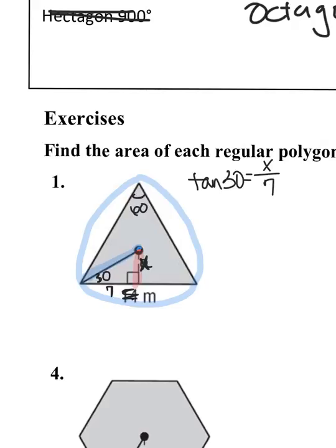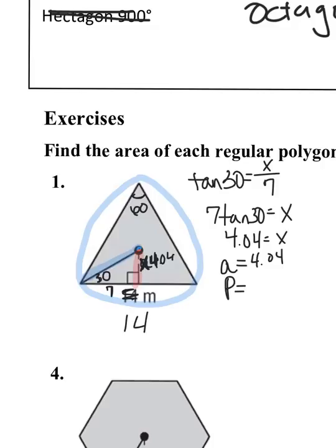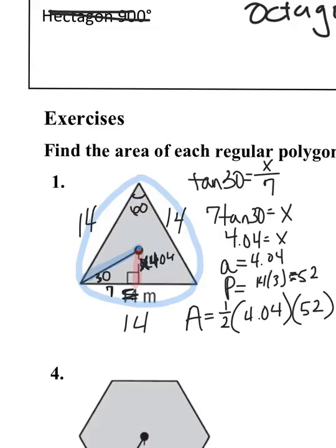We'll call it X. X over 7. How do I get X by itself? I'm going to multiply both sides by 7. So 7 tangent of 30 equals X. So my apothem is 4.04. My big P is perimeter. Well, each side is 14. For regular polygons, the sides are all the same. So 14 times 3 equals 42. And now just to plug it into my formula. The area of a regular polygon equals 1 half the apothem times the perimeter. The area of this triangle equals 84.9 meters squared.